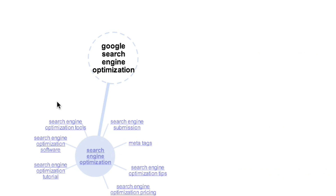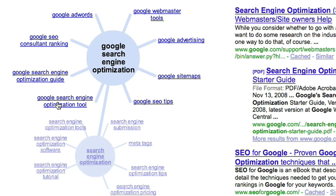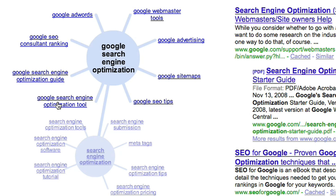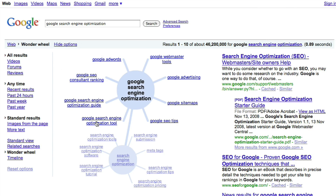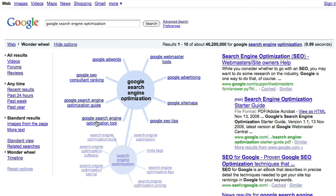So if I click on that, now I move to that phrase and you can see 'Google Search Engine Optimization Guide,' 'Google SEO Tips,' 'Google Sitemaps,' and then there's also 'Google Webmaster Tools' and 'Google AdWords.'